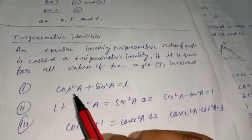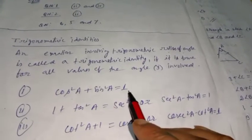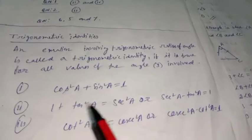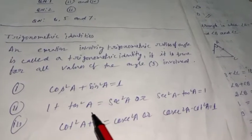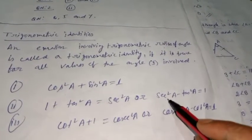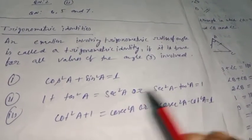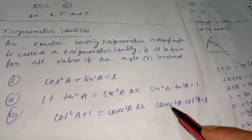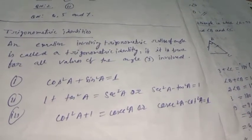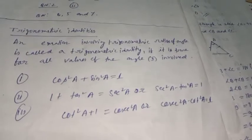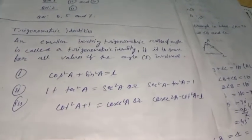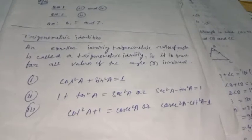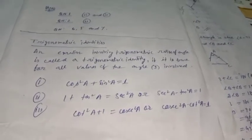We will have three trigonometric identities in this class: (1) cos²θ + sin²θ = 1, or sin²θ + cos²θ = 1; (2) 1 + tan²θ = sec²θ, or sec²θ - tan²θ = 1; (3) cot²θ + 1 = cosec²θ, or cosec²θ - cot²θ = 1.